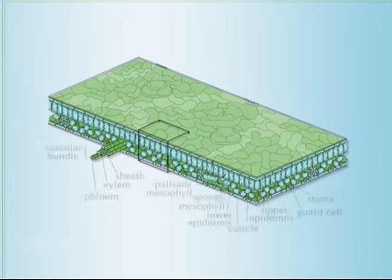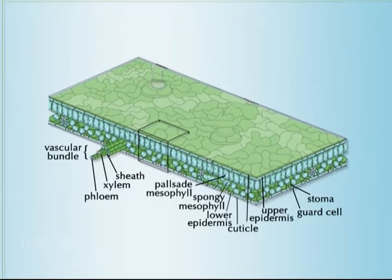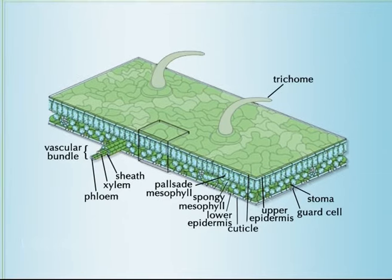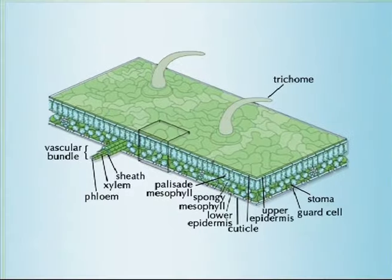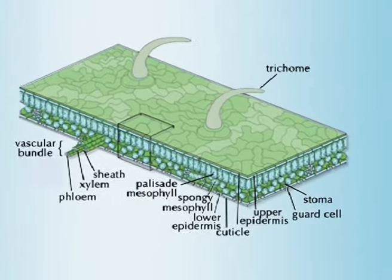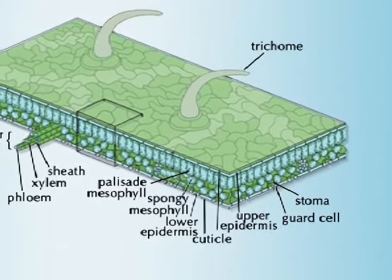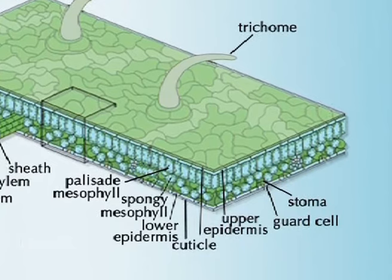The epidermis tissue includes several differentiated cell types: epidermal cells, epidermal hair cells (trichomes), cells in the stomata complex — guard cells and subsidiary cells. The epidermal cells are the most numerous, largest and least specialized, forming the majority of the epidermis. These are typically more elongated in the leaves of monocots than in those of dicots.